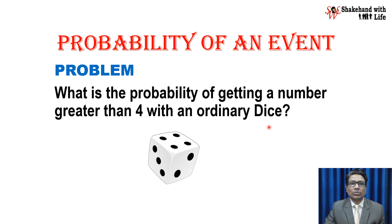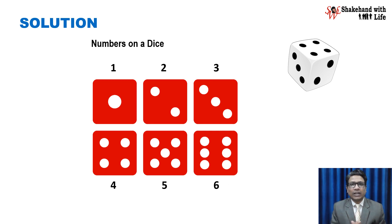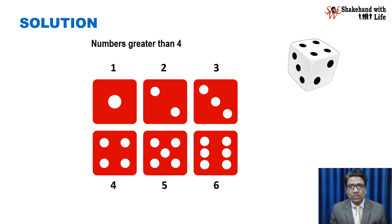Let us see how to find the solution of this problem. There are 6 numbers on a dice: 1, 2, 3, 4, 5, and 6. We want to find the probability of getting a number greater than 4. So how many numbers are greater than 4? We have 5 and 6 — two numbers.